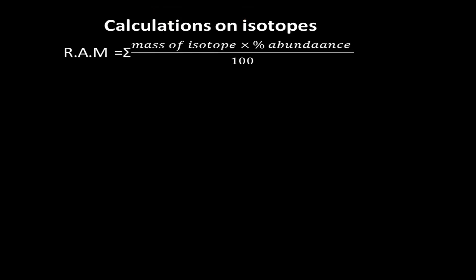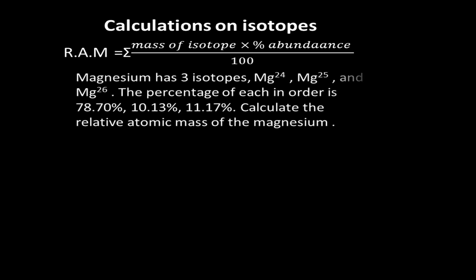The formula for relative atomic mass using isotope data is: relative atomic mass = Σ (mass of isotope × percentage abundance) ÷ 100. Example 1: Magnesium has three isotopes — Mg-24, Mg-25, and Mg-26 — with percentage abundances of 78.7%, 10.13%, and 11.17% respectively. Calculate the relative atomic mass of magnesium.